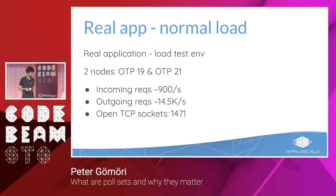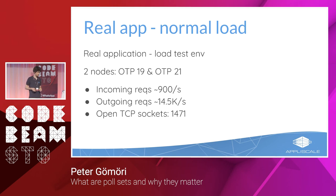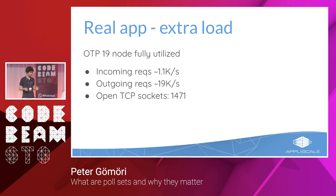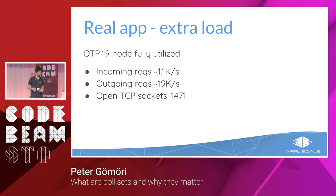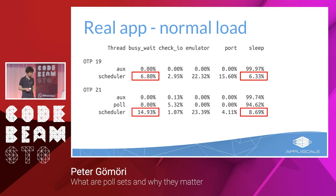I ran two tests with two nodes: one OTP 19 and one OTP 21. The normal load test used about 14,000 outgoing requests per second with 1,400 TCP connections. The extra load test pushed the OTP 19 node to 100% scheduler utilization, at about 19,000 requests per second with the same number of connections. What follows is a stripped-down version of the microstate accounting output — I removed threads with no activity and columns where there was no difference between versions.